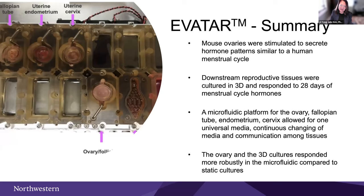In summary of Evitar: we were able to reprogram mouse ovaries to secrete estrogen and progesterone in the pattern of a human menstrual cycle, which was a huge feat. The downstream tissues responded to these hormones and actually thrived sharing media and paracrine factors with each other, which increased their longevity and made them more responsive to hormones — unlike what we see when culturing them individually as separate units.